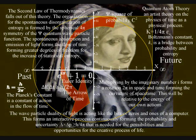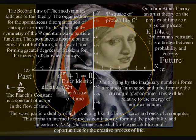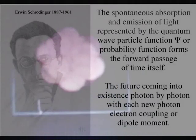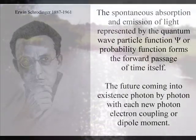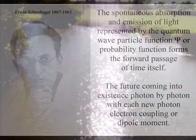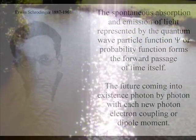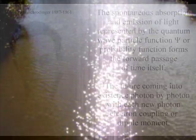This theory is based on just two simple postulates. The first postulate is that the spontaneous absorption and emission of light — represented by the quantum wave-particle function, or probability function of quantum mechanics — forms the forward passage of time itself, with the future coming into existence photon by photon, with each new photon-electron coupling or dipole moment.